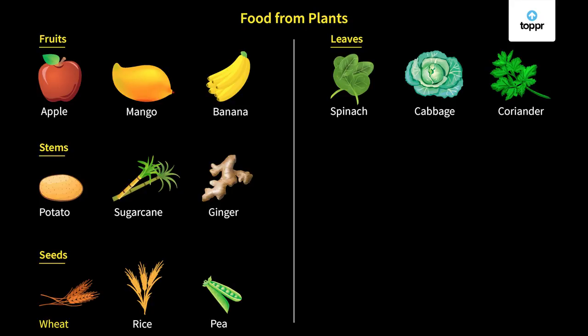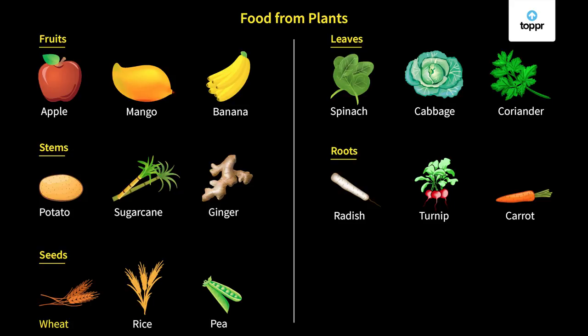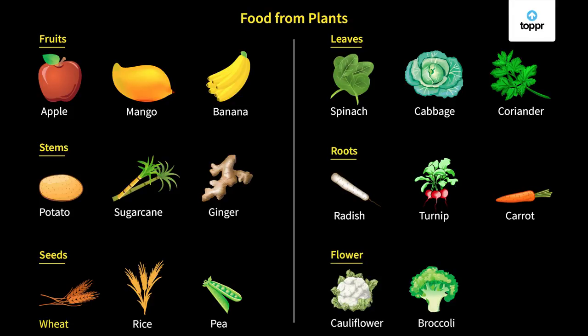We also eat the roots of plants — these can be radish, turnip, and carrot. The last part we eat can be flowers. We also eat flowers of the plant, for example cauliflower, broccoli, and so on. So these are some of the plant parts that you eat in your daily life.